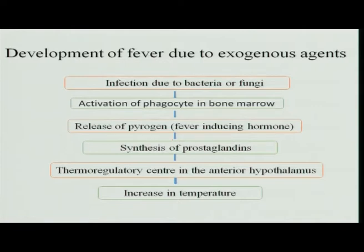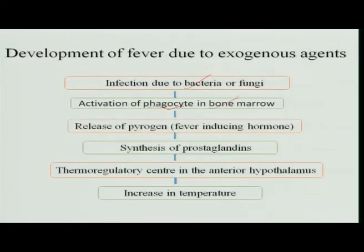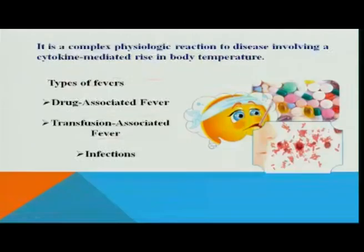How is fever developed from an exogenous agent? When bacteria enter the body, the white blood cells become very active due to their phagocytic nature — they engulf and kill bacteria. This activates phagocytes in the bone marrow and triggers release of pyrogen, the fever-inducing hormone, to fight infection. Prostaglandins are then synthesized and the thermoregulatory center in the anterior hypothalamus is activated, resulting in increased temperature. This is a complex physiological reaction involving cytokine-mediated rise in body temperature.